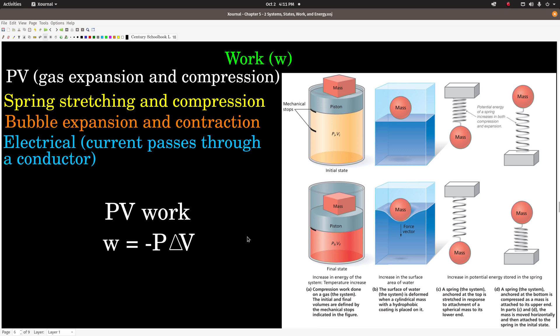Okay, so let's talk about work a little bit. There's several different kinds of work. What we call PV work, which is due to a gas expanding or being compressed. And that, by the way, is the one that we are going to focus on here. We're not going to really deal with the other kinds of work at this point, but just so that you know what they are. A spring stretching or compressing, right?